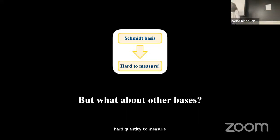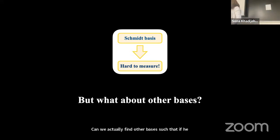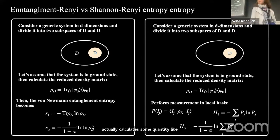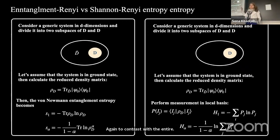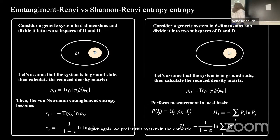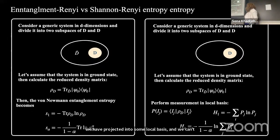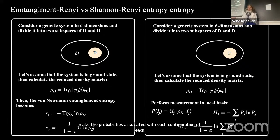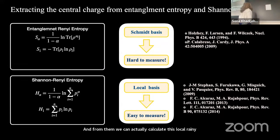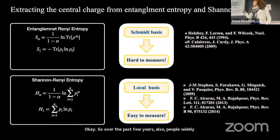The question we have been asking over the past few years is: can we find other bases such that if we calculate some quantity like entropy, we can also extract information about the central charge? In contrast to entanglement entropy, here we can look at what is known as local Shannon or Rényi entropy: we prepare the system in the ground state, take a subsystem of it, and calculate the probabilities associated with each configuration. From these we can calculate this local Rényi entropy. Over the past few years people have widely studied this quantity for periodic or open boundary conditions across different quantum spin chains, and this is still a very active field.